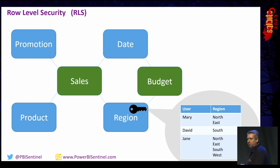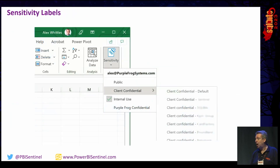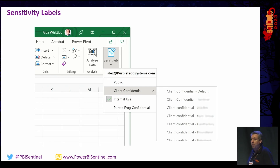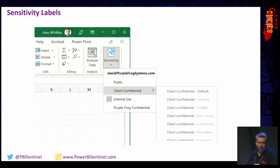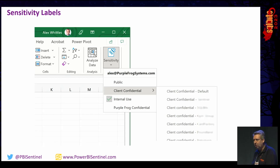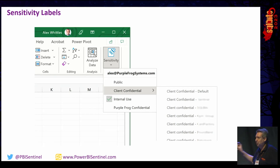Sensitivity labels in Power BI are really important — we use those a lot at Purple Frog. You can configure standard policies for what people can do with different sensitivity labels: whether content can be exported, emailed, or who can view it. This is not just a Power BI thing — it's an Office 365 thing covering Word, Excel, PowerPoint, Power BI, Outlook, everything. But Power BI is a critical part of that, so do raise it with your organization. It flows into Power BI once configured.